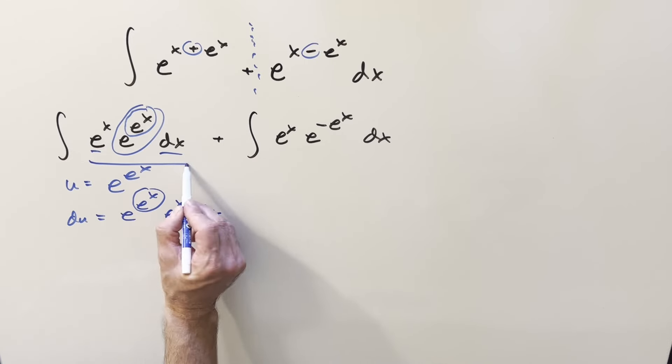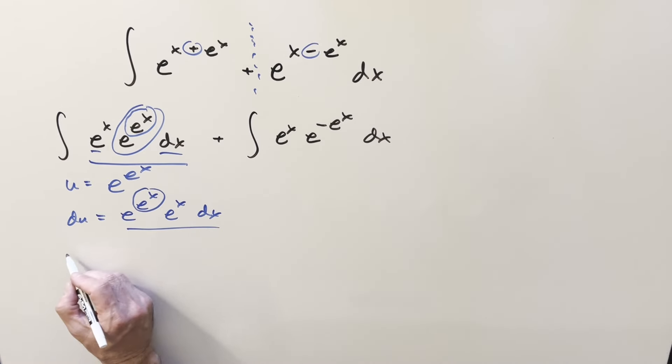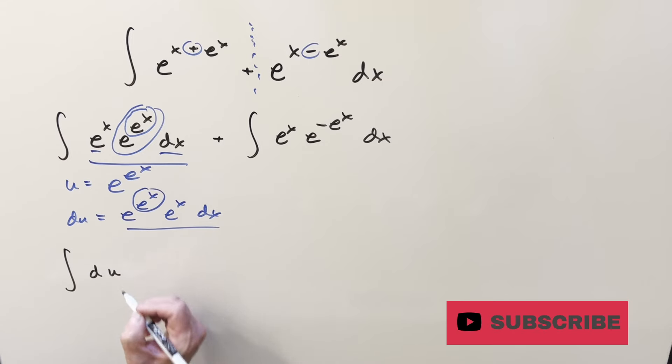But what just happened is we just got the whole integral right there, because everything there matches this. So what's going to happen is this whole integral just simplifies down to just being du.